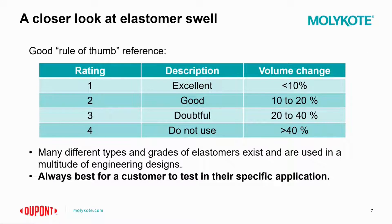While we're on the topic of swell, let's talk about elastomer swell. A good industry reference uses a rating scale: a rating of one is considered excellent, meaning under 10% swell; a two is good, at 10–20%; a three is doubtful, at 20–40%; and a four means not recommended, at greater than 40%. There are many different elastomer grades and brands, and all of these can differ. We always recommend customers do their own testing with specific compounds and elastomers to confirm suitability for their application.